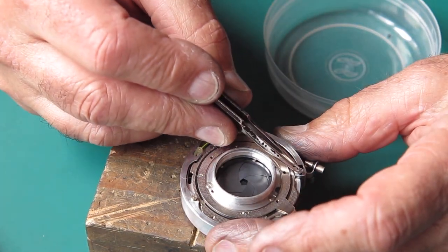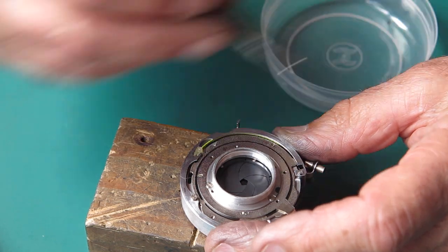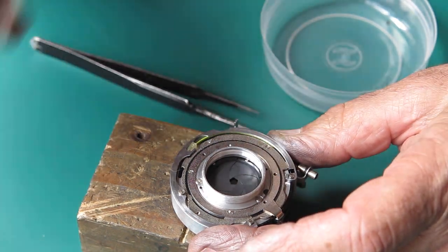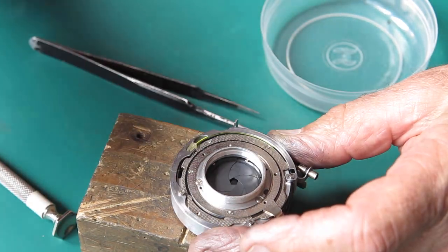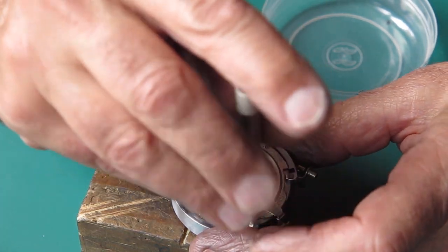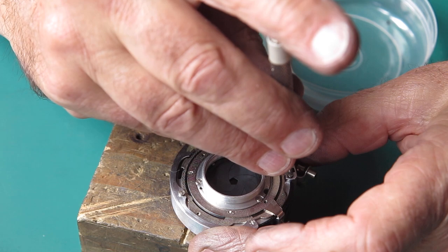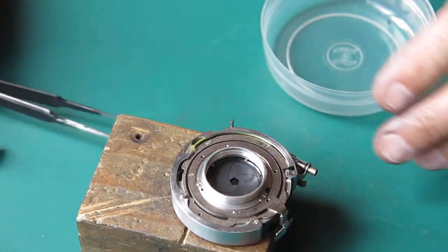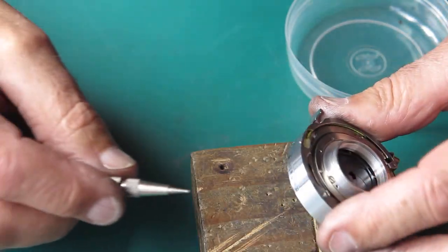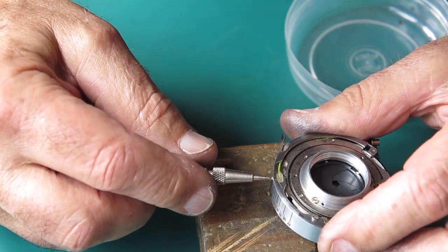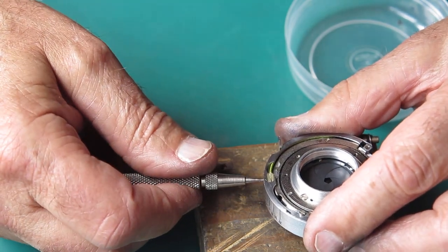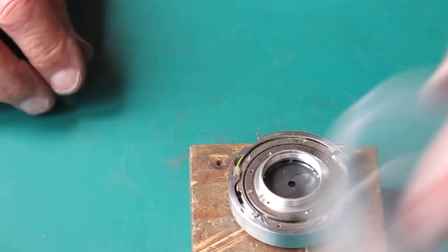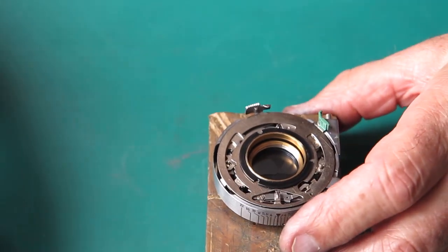The two countersunk head screws are different diameters. The one on this tab here at the end is a smaller diameter. If you mix them up, it won't go well. That's good. And the flash contact, the clamp for the flash contact - we'll just run that screw up. Let's give it a couple of turns. It doesn't need to be screwed in until it's disappeared. That's the back of the shutter.